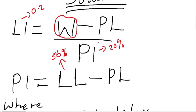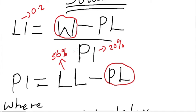In order to find the value for the plastic limit, we are going to use the formula for plasticity index to find PL. Thereafter, we are going to substitute the value for the liquid limit. So let's find the value for the plastic limit. The value for the plasticity index is 20%.